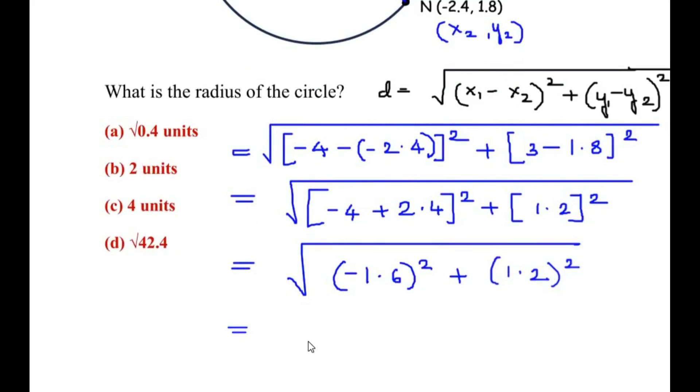Now here we have (-1.6)² is nothing but -1.6 times -1.6, so we get the value as positive 2.56 plus 1.2 times 1.2 is 1.44.